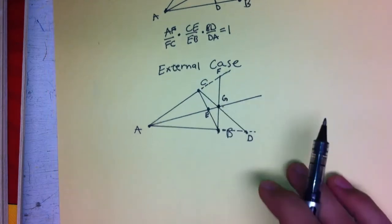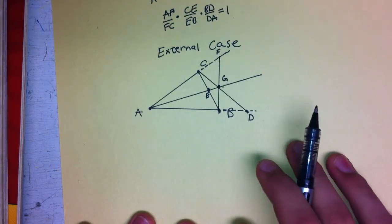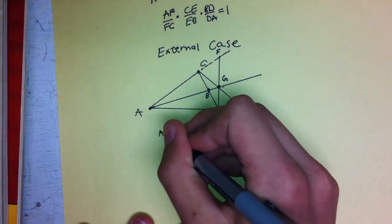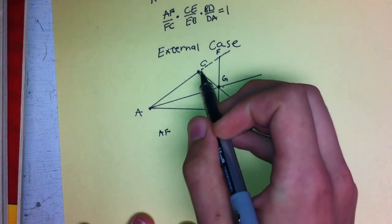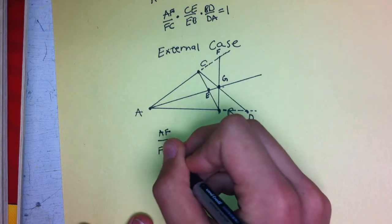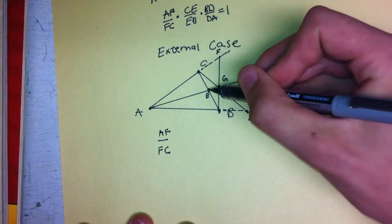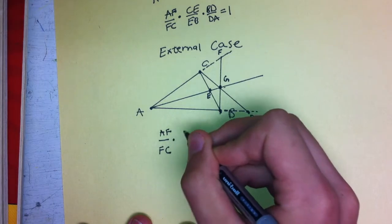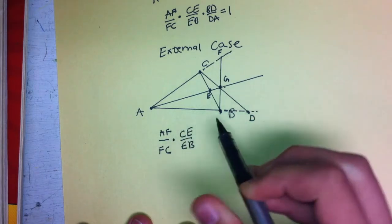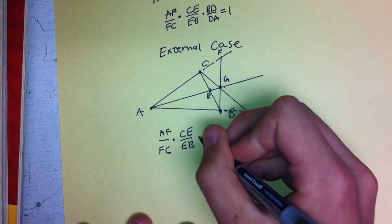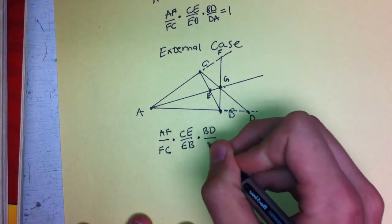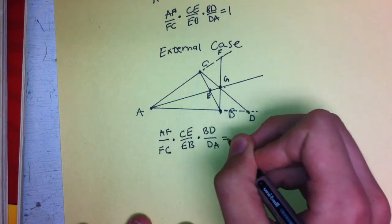So when we write out the expression for Ceva's Theorem here, we go from the point to the intersection point: AF, and then back to the point, divided by FC, times CE divided by EB, and then from the point to the intersection point, times BD, and from the intersection point back to the original point, divided by DA. That entire expression equals 1.